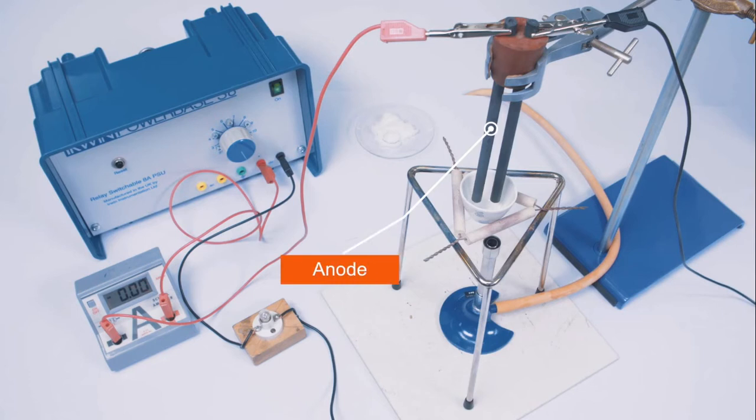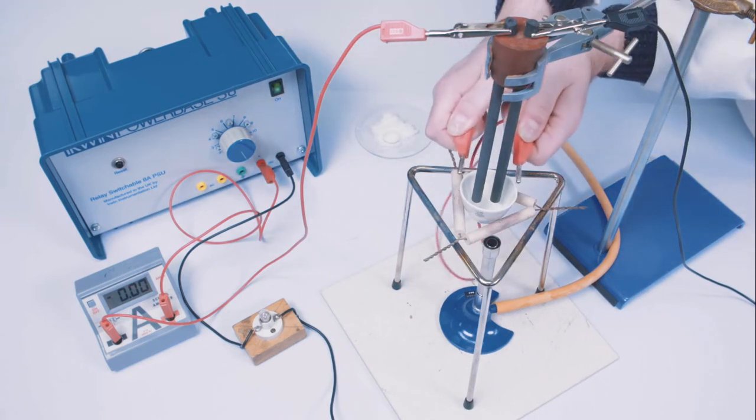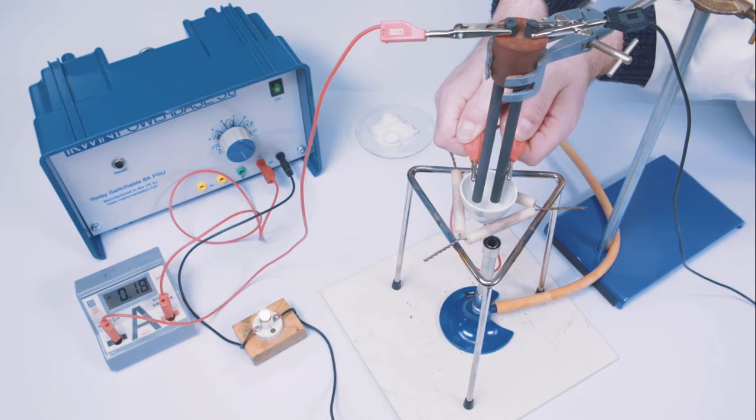The electrode to the positive terminal becomes the anode. Test that the external circuit is connected properly by bridging the electrodes with a metal object. The bulb should light up.